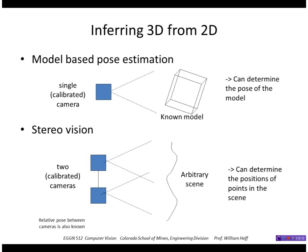If we have two calibrated cameras and we know the relative pose between them, we can find 3D information from an arbitrary scene. We don't have to know the model of the scene, and we can determine the positions of points in that scene from those two cameras. That's what we're going to be talking about today.